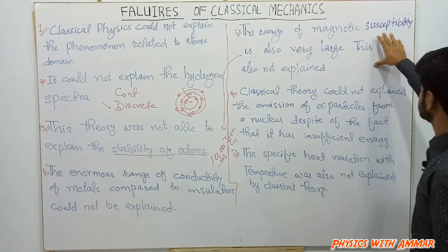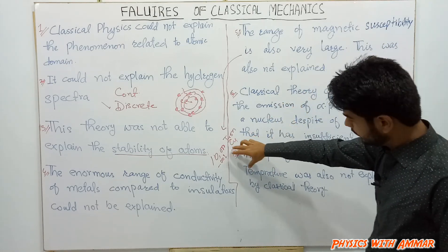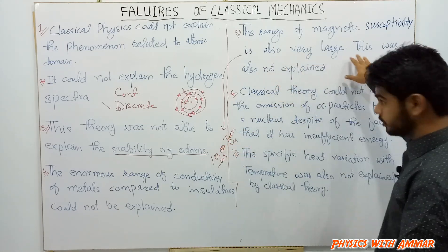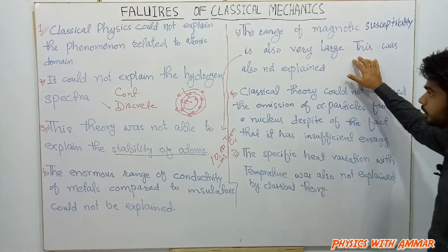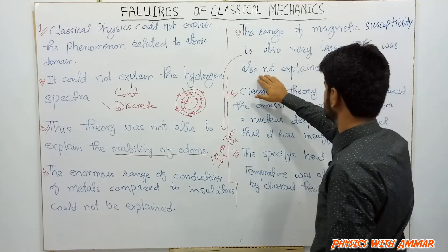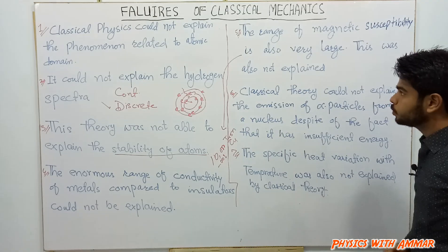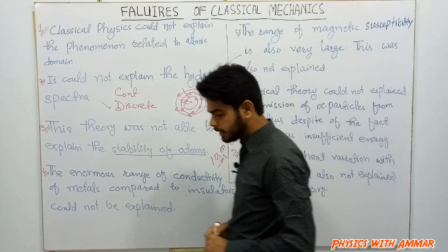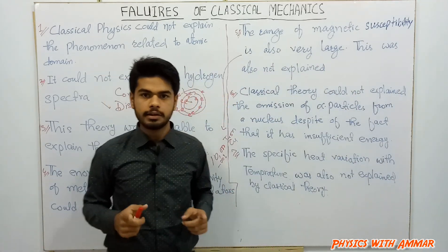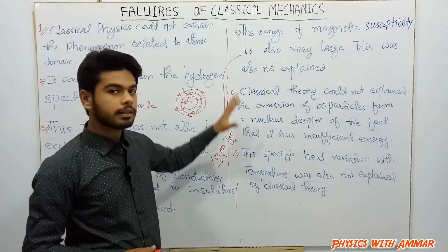The magnetic susceptibility range was also very large, and this was also not explained by classical mechanics or classical physics. This was another significant failure.